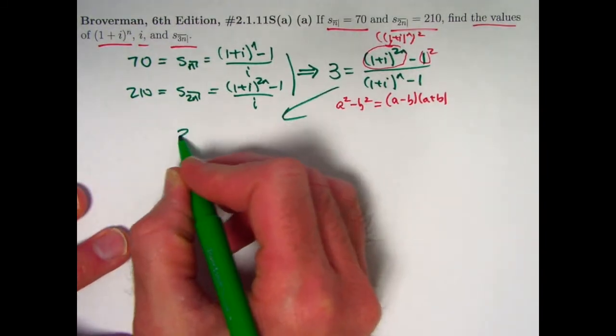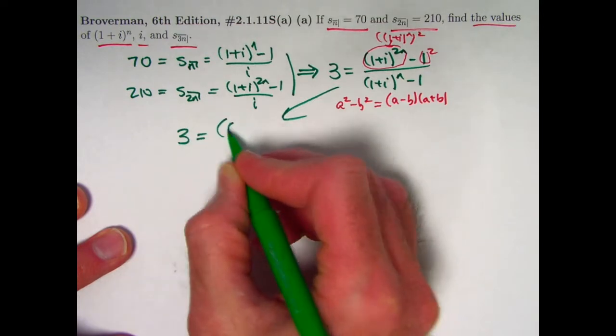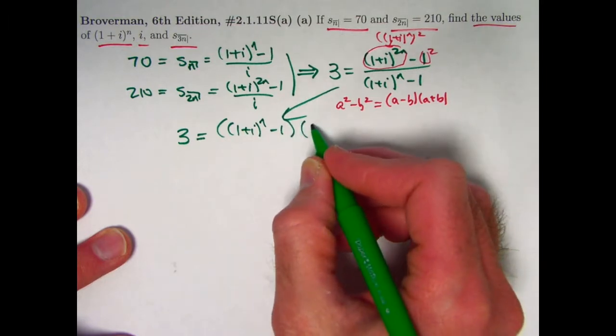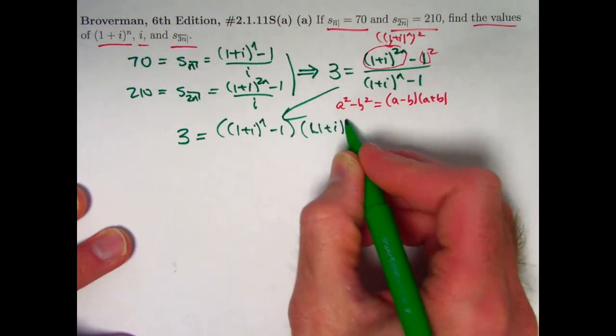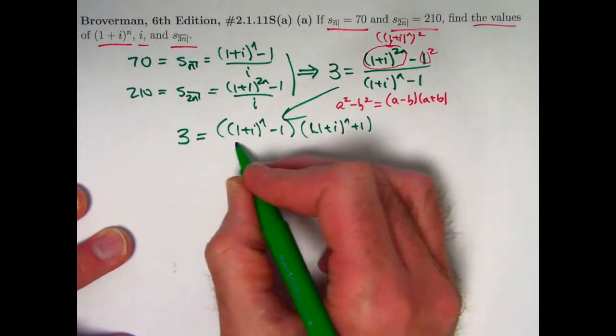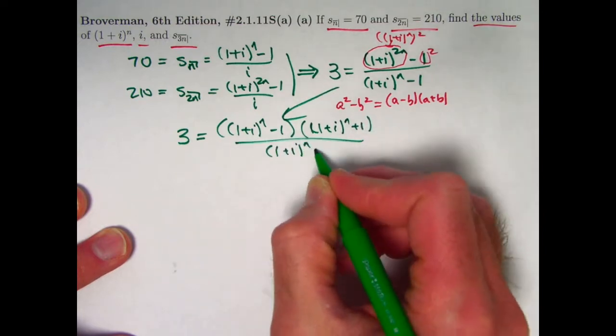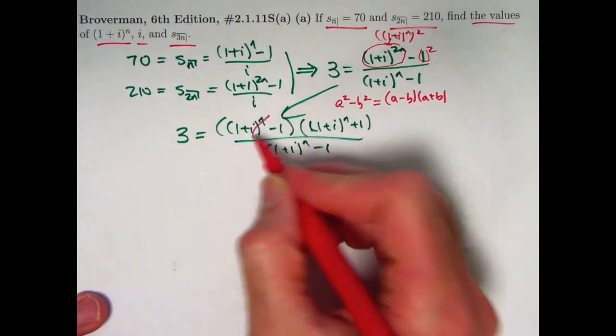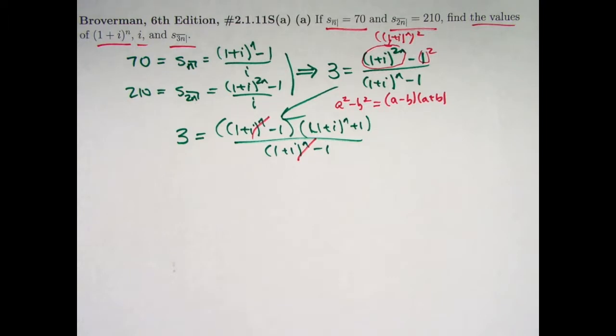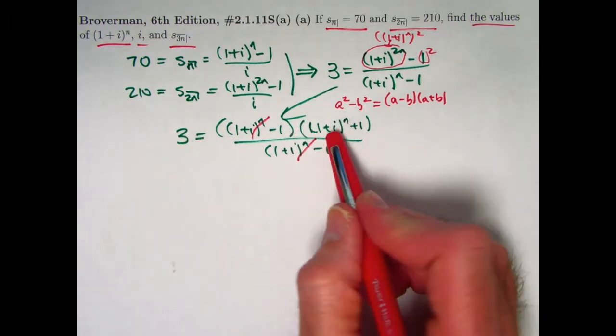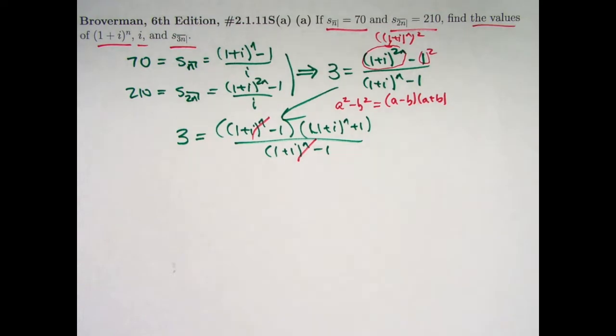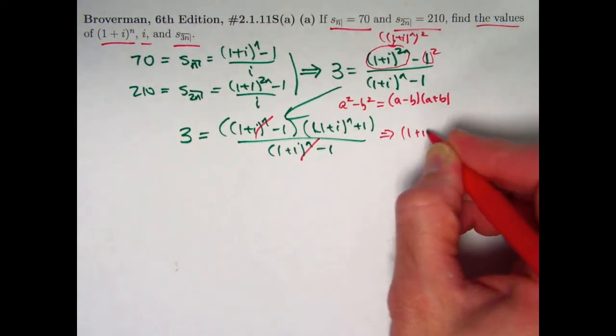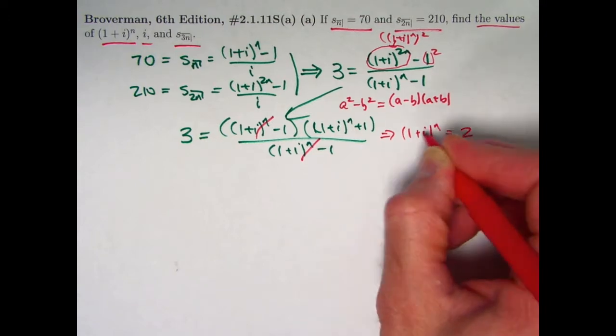I can factor the top and another good thing is that it's going to cancel with the bottom. So I get that 3 equals ((1+i)^n - 1)((1+i)^n + 1) / ((1+i)^n - 1). Now we get cancellation. This factor cancels with this and we are left with 3 equaling the quantity we want to solve for plus 1. Just subtract 1 from both sides, and therefore (1+i)^n must equal 2.